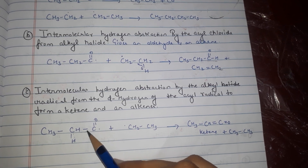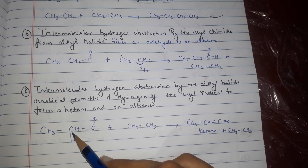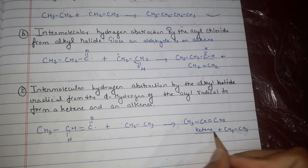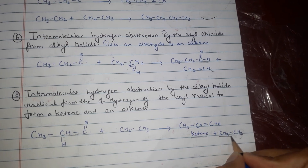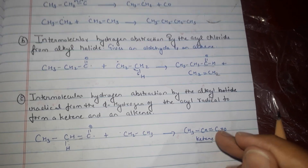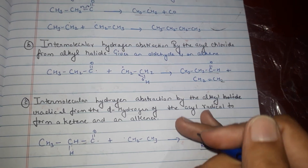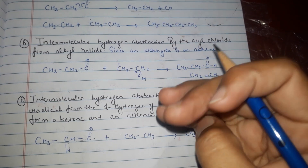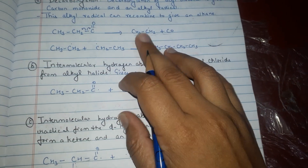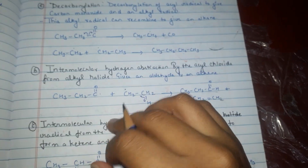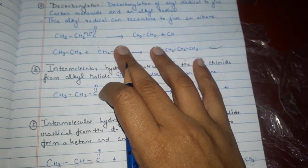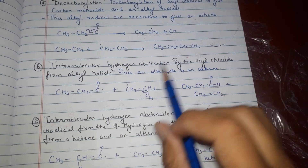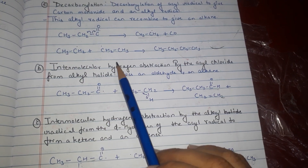The two radicals form a double bond, resulting in the formation of ketene and alkyne. These are the three steps of the secondary process: first decarbonylation, second formation of aldehyde and alkene, and third formation of ketene and alkyne.